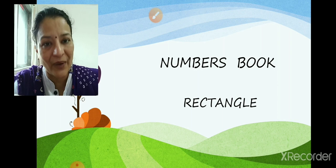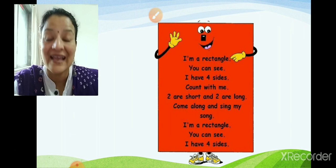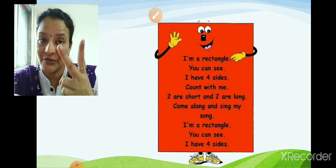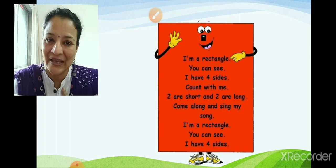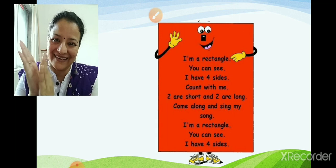Before we start understanding what is a rectangle, let us say a small rhyme on rectangle. Now — I am a rectangle, you can see. I have four sides, count with me. Two are short, two are long. Come along and sing my song. I am a rectangle, you can see. I have four sides, count with me.